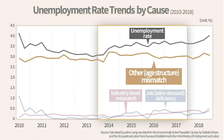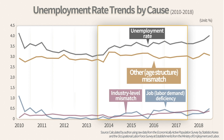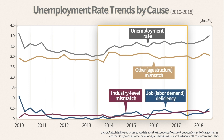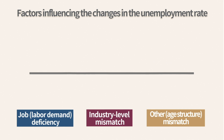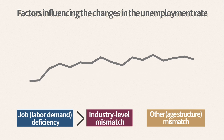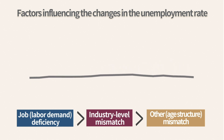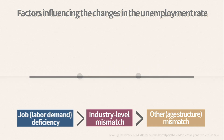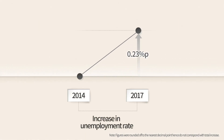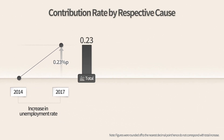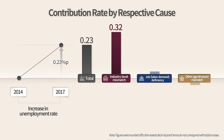Other mismatch unemployment is driven by the age structure and other factors. From 2014 to 2017, other mismatch unemployment took the largest share of the average unemployment rate during the period. However, the order in which factors influence fluctuations in the unemployment rate — which is vital to unemployment policies — was job deficiency first, then industry-level mismatch, and then other mismatch.